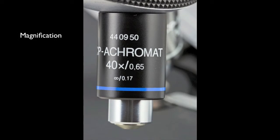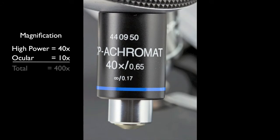This lens magnifies objects 40 times. The ocular magnifies the image 10 times. When using this objective, objects will appear 400 times larger than they really are.